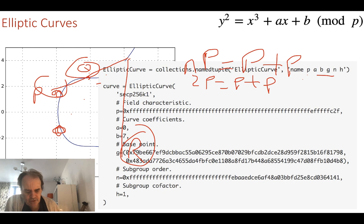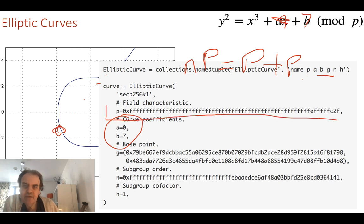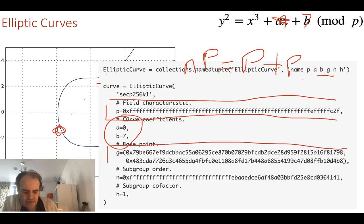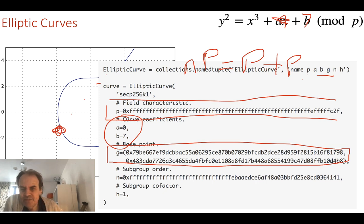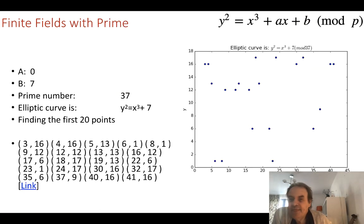Here's an example of a real-life curve used in Bitcoin. The a value is zero, b value is seven, and the prime number is defined in hexadecimal — typically something like 2 to the power of 256 minus a certain value. We have a generator point as the initial point on the curve, and we add it a certain number of times to find our public key point. The larger the prime number, the more secure it will be, because there will be more points on the elliptic curve.